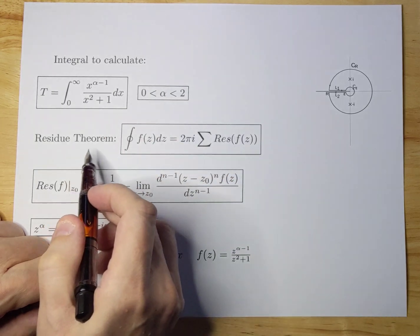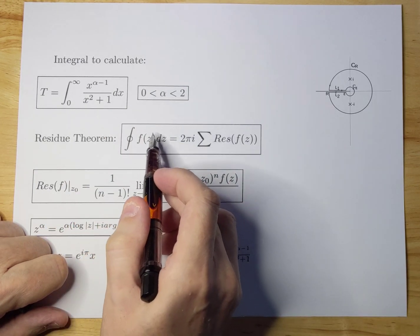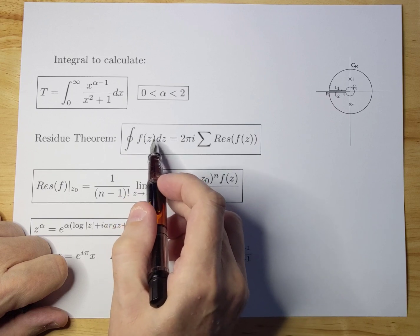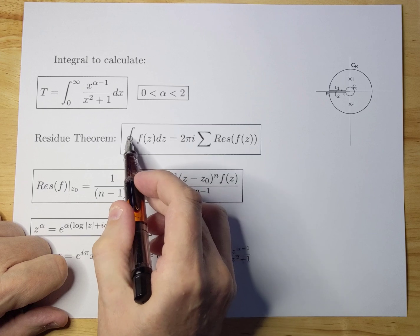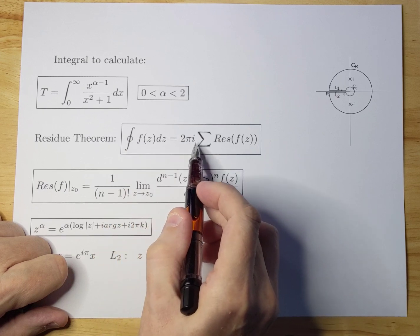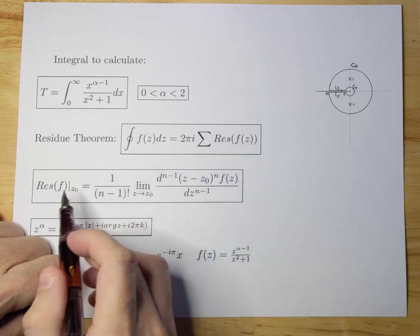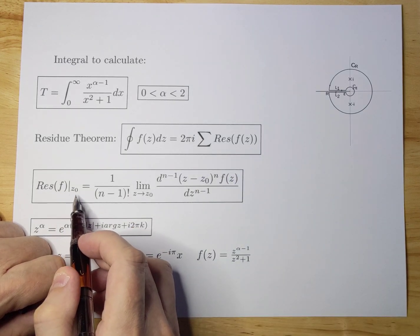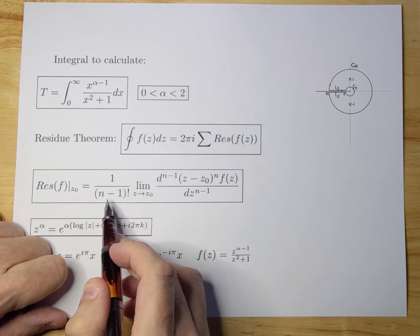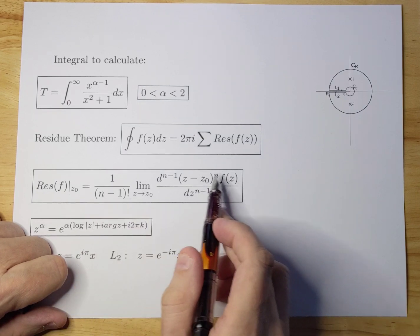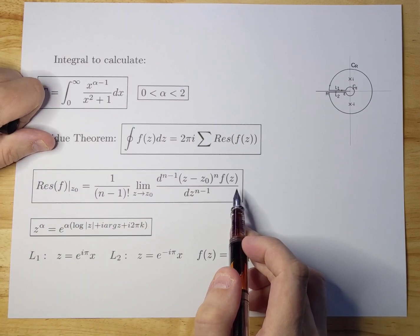We're going to use the residue theorem, which is defined as such. If you have a complex analytical function over a contour, that equals 2πi times the residue of f at the poles. The residues at a point are defined as such. If you have multiple residues at the same point, you have to use a specific formula to calculate the residues, and we will see later how that goes.